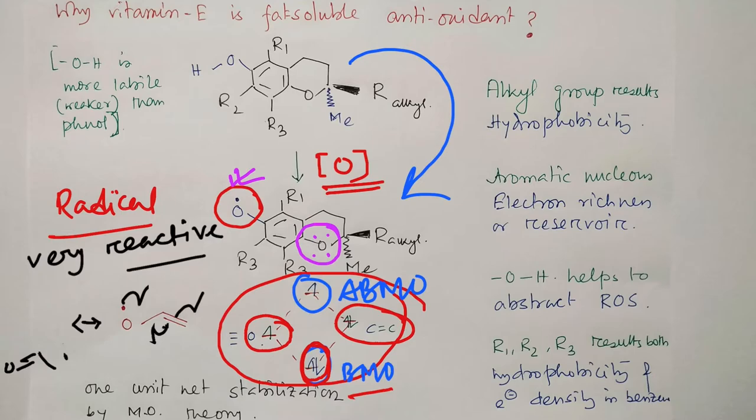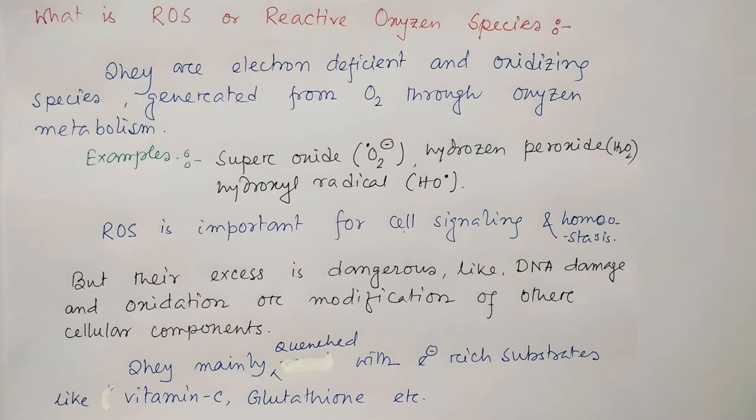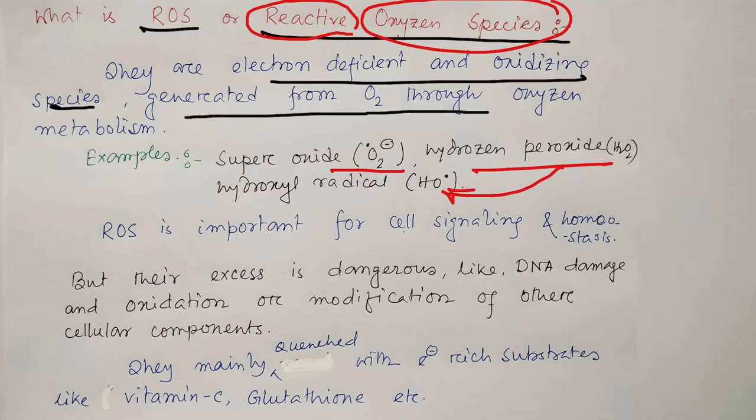What is ROS? ROS are nothing but reactive oxygen species. From the name you can understand - first of all, they are very reactive, and second, they are oxygen-containing species. What are the examples? Actually superoxide, hydrogen peroxide (H₂O₂), and from hydrogen peroxide what produces - peroxide radicals. They are electron-deficient oxygen oxidizing species generated from oxygen through metabolic processes because we take oxygen for our metabolic processes like respiration. During these complex chemical transformations, our body produces these reactive oxygen species.